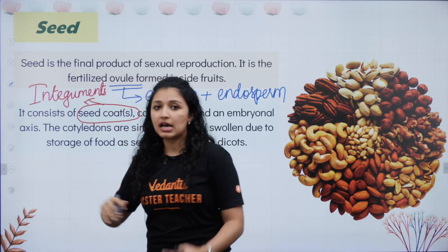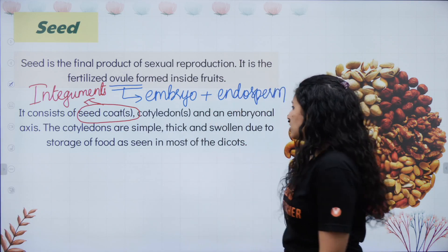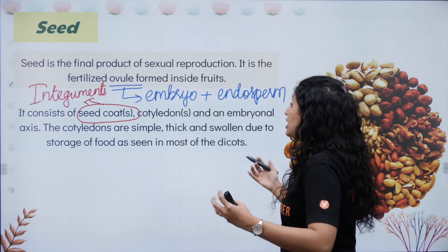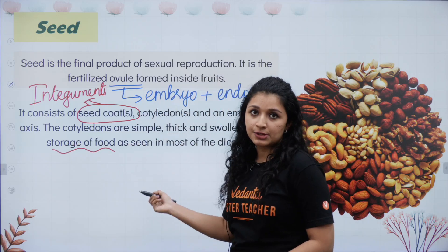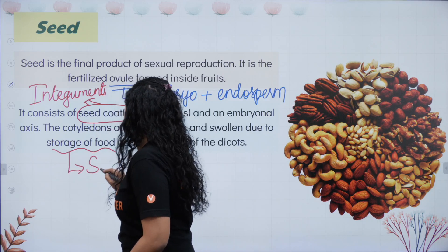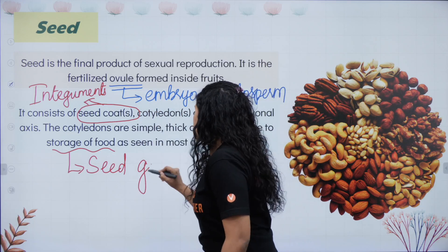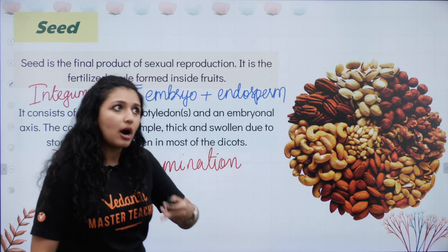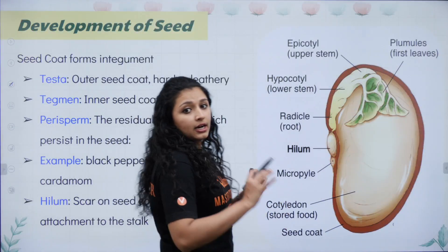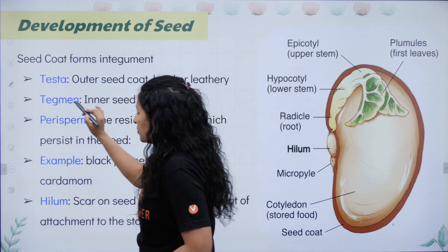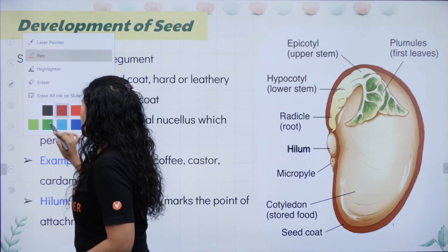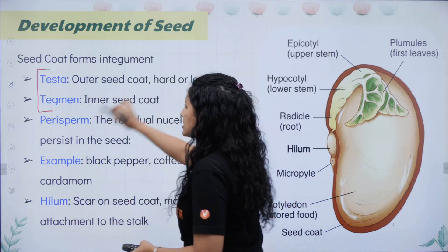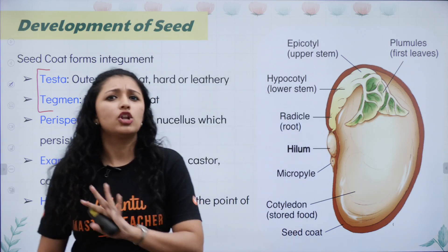The seed coat is generally developed from the integuments of the ovule. The integuments develop and mature to form the seed coat. There can be one or two cotyledons. The cotyledons are simple, thick, and swollen due to storage of food, as seen in most dicots. This food stored in the cotyledon is used for seed germination. The seed coat has two layers: the outer layer is called testa and the inner layer is called tegmen.